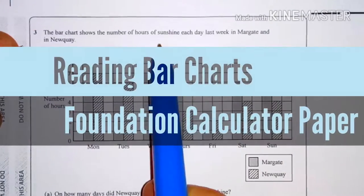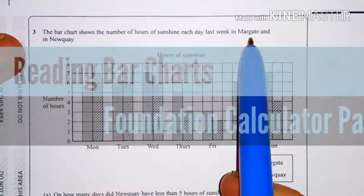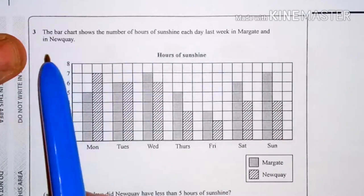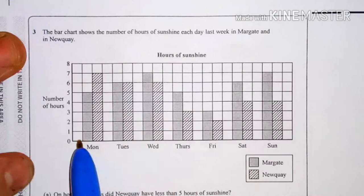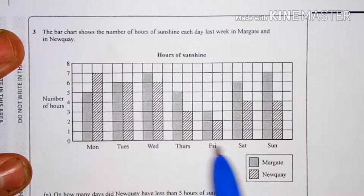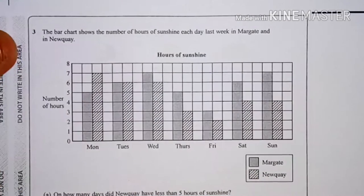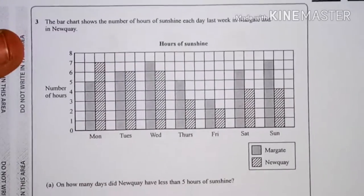The bar chart shows the number of hours of sunshine each day last week in Margate and in Newquay. The ones that have got the lines through are Newquay. The other ones are Margate.